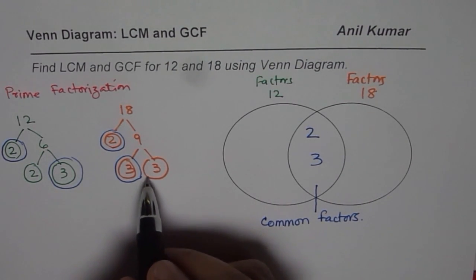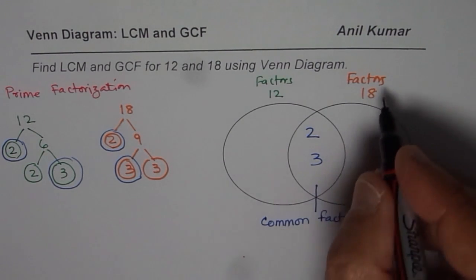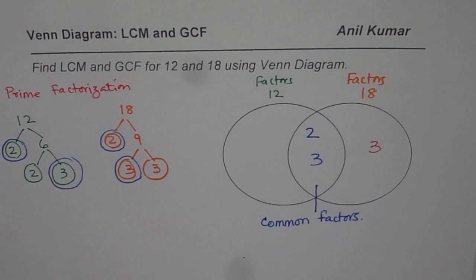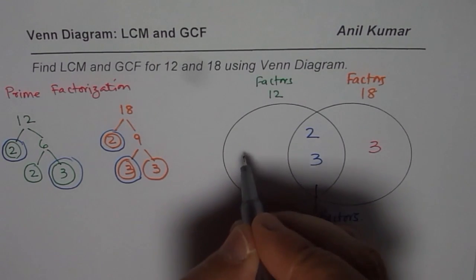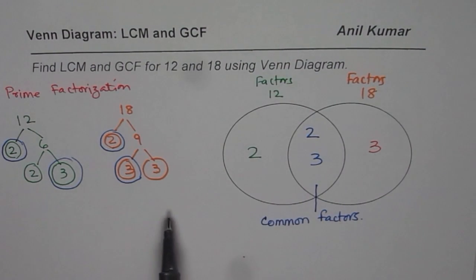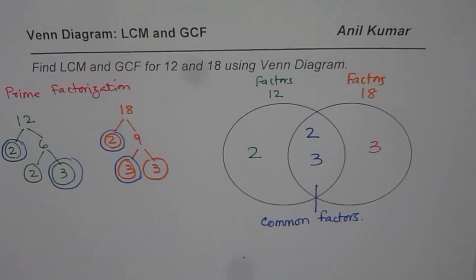Now the other factors remaining will be placed in their respective circles. 3 is remaining for 18, so we will go here. And then we have 2 remaining for 12, so 2 will come here. You can see 2 times 2 is 4, 4 times 3 is 12. So 12 is covered. 18: 2 times 3 is 6, 6 times 3 is 18. So likewise we can now place the common factors in the Venn diagram.